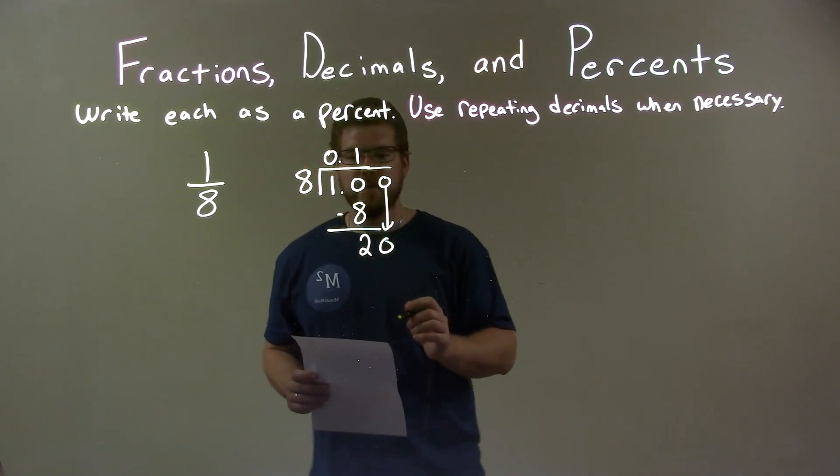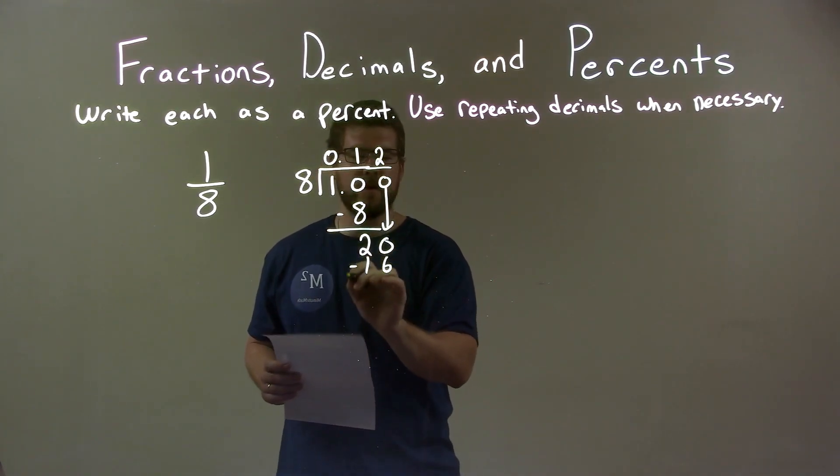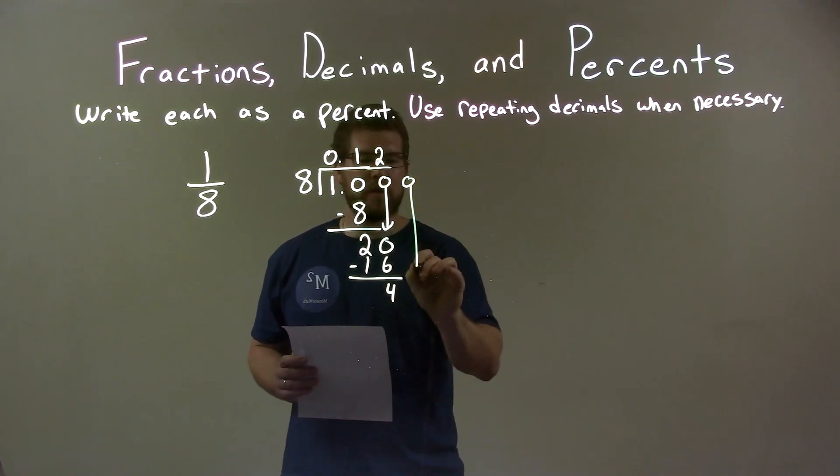8 goes into 20 two times. 2 times 8 is 16. Subtracted again, we have 4. We bring down another 0.